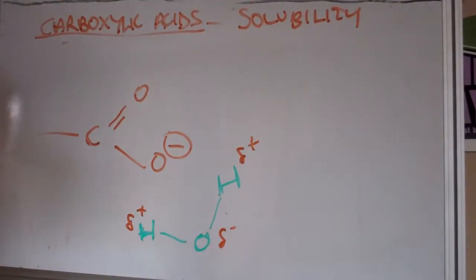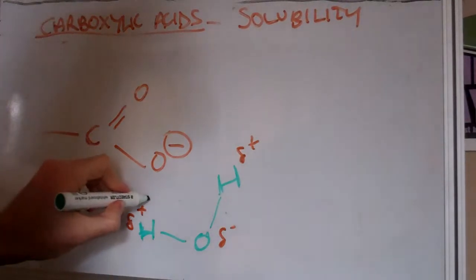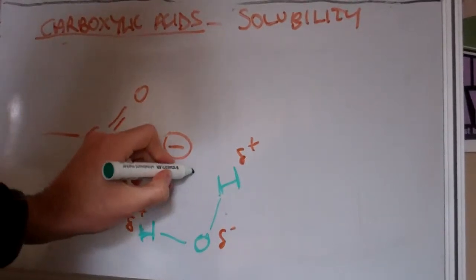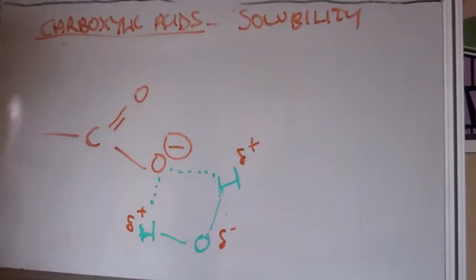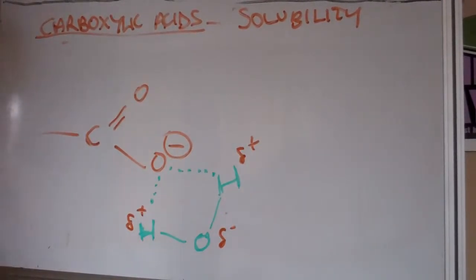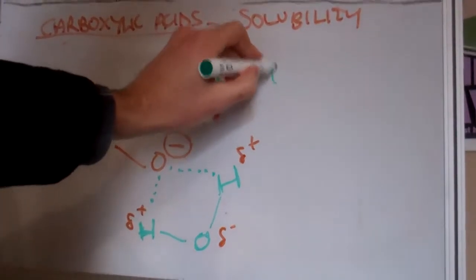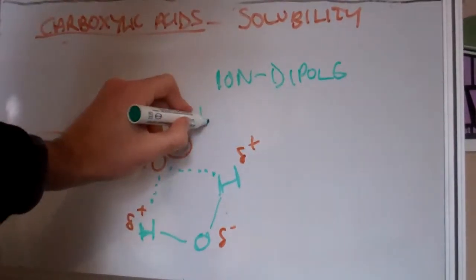Now the carboxylate ion is able to form an ion-dipole interaction with partial positive charges on the water molecule. This is called ion-dipole interaction.